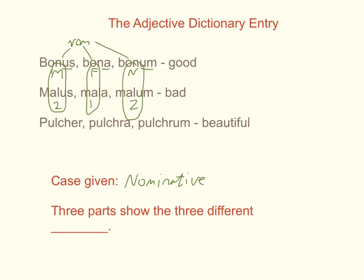Then we see pulcher, pulchra, pulchrum. You have a slightly unusual masculine form, but it's still 2-1-2 — masculine, feminine, neuter. The 'er' ending is just like the noun 'vir' — there can be an 'r' in the nominative, and that's what this 'er' is doing in pulcher. So it doesn't always have to be 'us,' it can be 'er' as well. But it's still 2-1-2: masculine, feminine, neuter. The dictionary shows all three parts to indicate the three different genders.